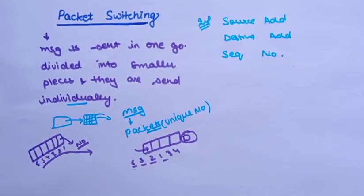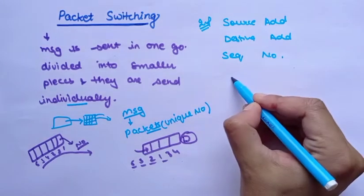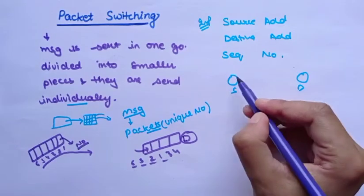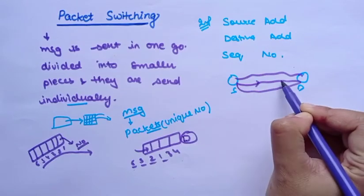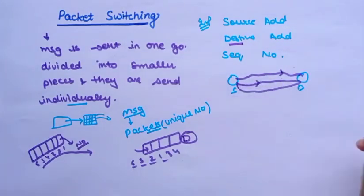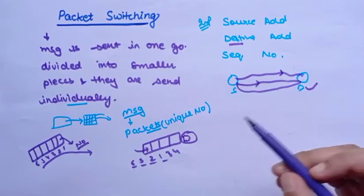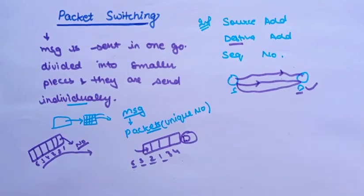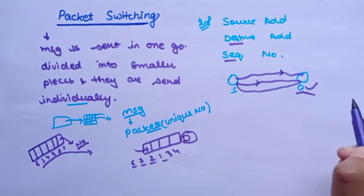Packets will travel across the network taking the shortest path possible. There are multiple routes between source and destination, so some packets may go through different routes. As long as every packet has the proper destination address, it will reach the destination. The sequence may vary, but since the sequence number is added in the header, all the packets are reassembled at the receiving end in correct order.